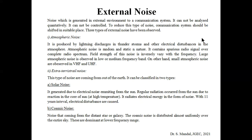Atmospheric noise is produced due to lightning discharge in thunderstorms and other electrical disturbances in the atmosphere. This sparking or lightning is random and static in nature and contains spurious radio signals over the complete radio spectrum. That's why during lightning, FM or AM reception quality degrades and noise is heard. The field strength of atmospheric noise is inversely proportional to frequency, so large atmospheric noise is observed in low and medium frequency bands, while small atmospheric noise is observed in the VHF and EHF bands.